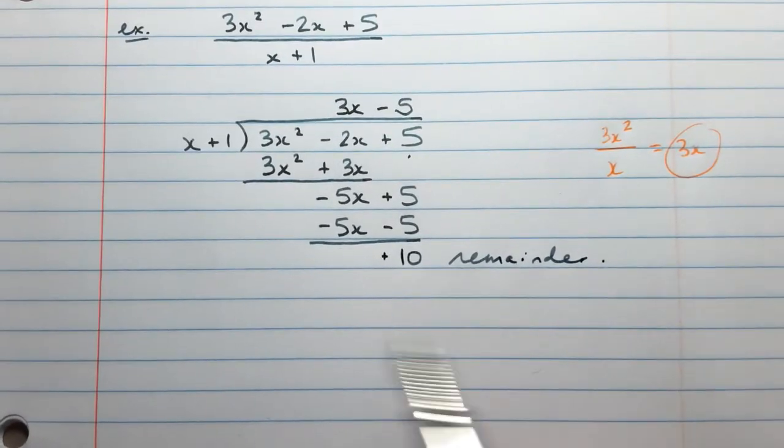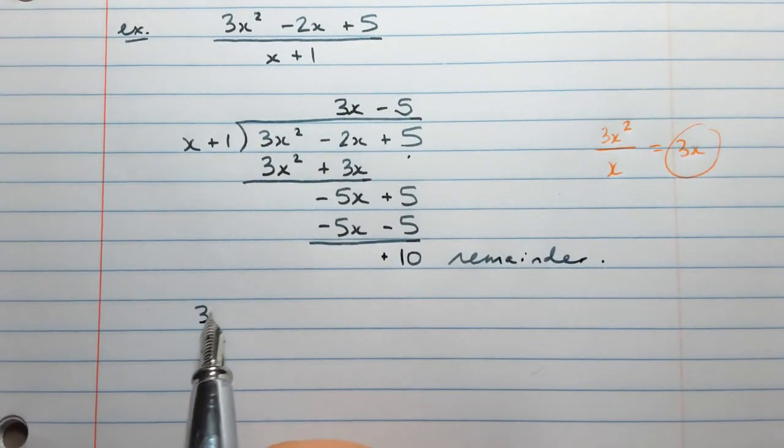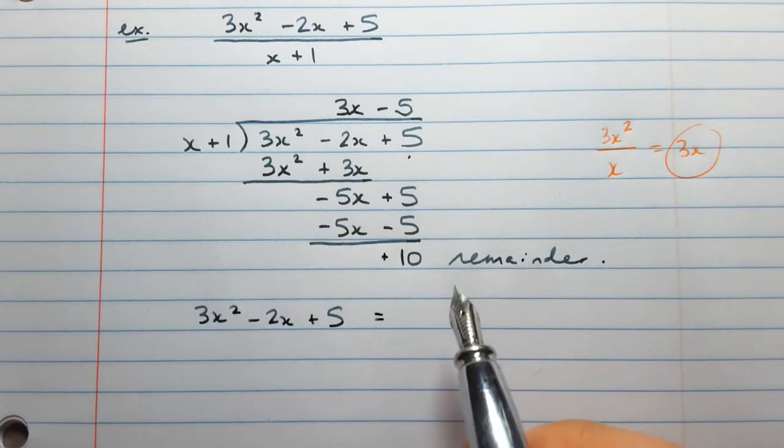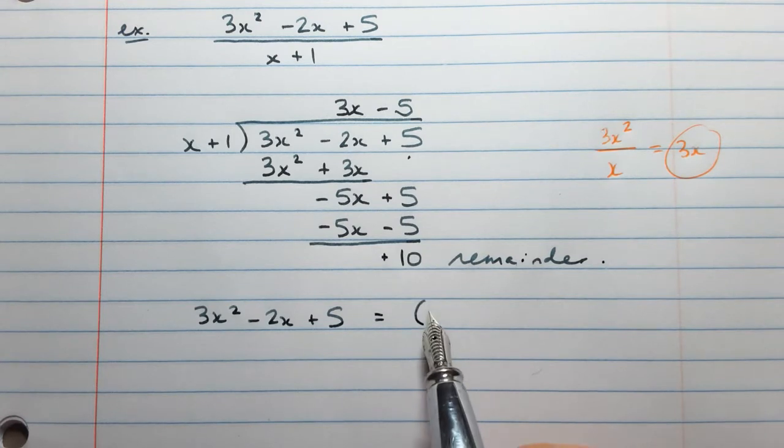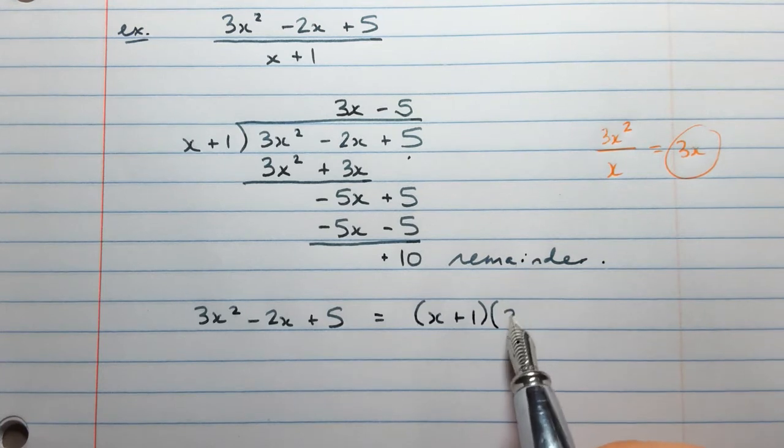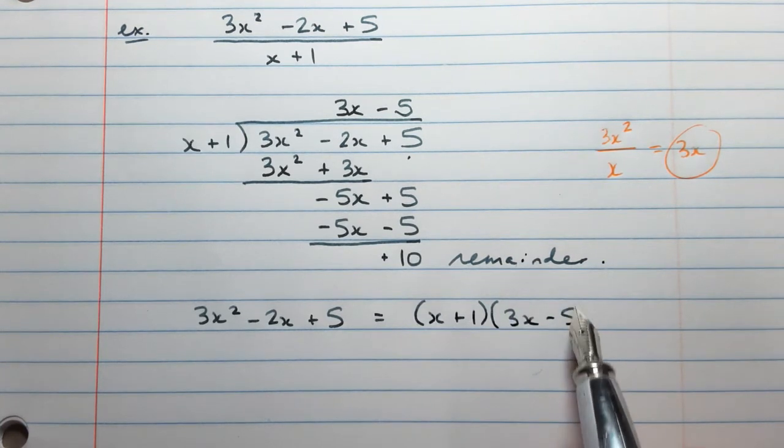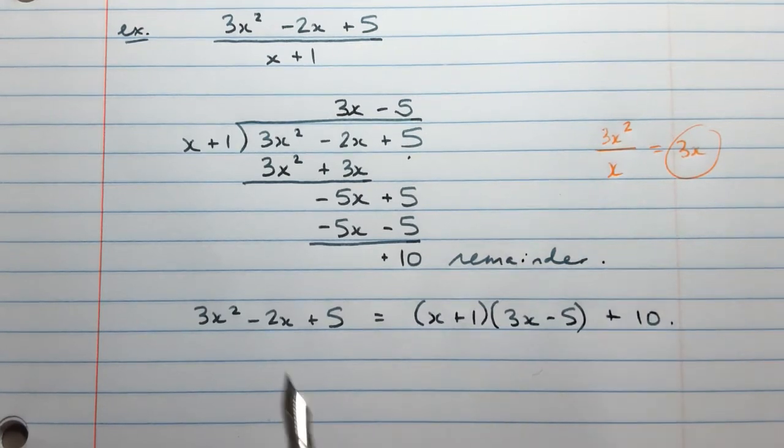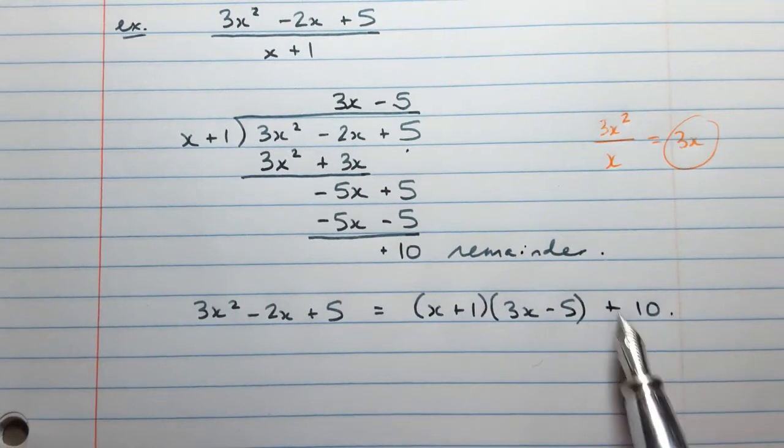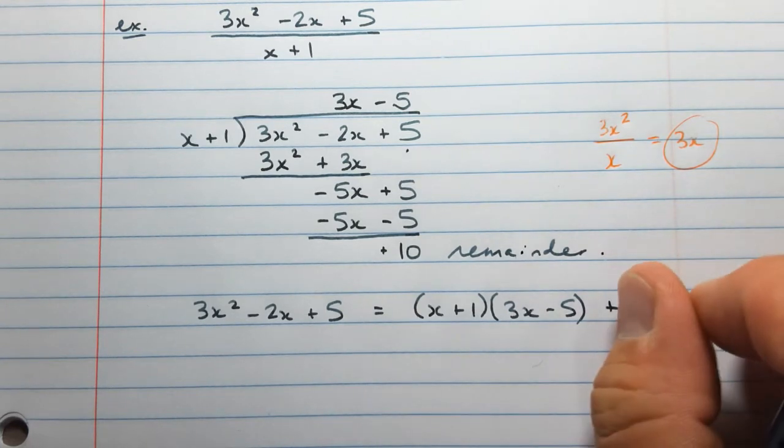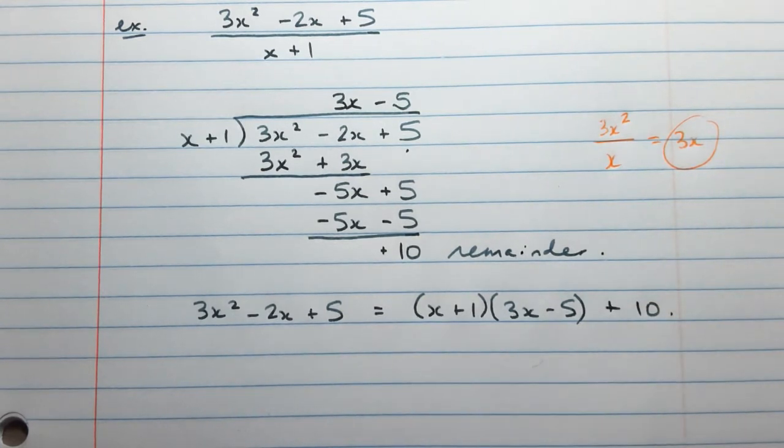I'm going to look at this first term only and this first term only, and divide. Negative 5x divided by x is negative 5. Now we multiply that, negative 5 times this binomial, the divisor, and write it underneath. Negative 5 times x plus 1. Negative 5x and negative 5. When you subtract, the x terms will go away, but we'll have 5 minus negative 5, which is positive 10. That is the remainder.